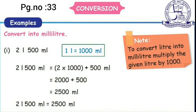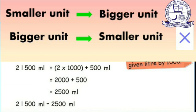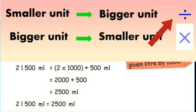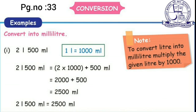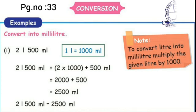Conversion: to go from a smaller unit to a bigger unit, you have to divide. To go from a bigger unit to a smaller unit, you have to multiply. To convert liter into milliliter, multiply the given liters by 1000.